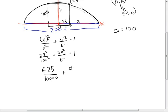and this is 900 over b squared is equal to 1. So, 625 divided by 10,000 is equal to 1/16th plus 900 over b squared is equal to 1.